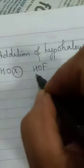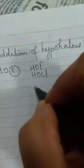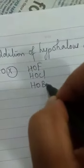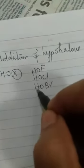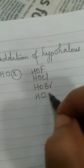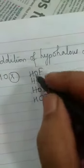You can have different types. You can have HOF, HOCL, HOBR. It should be more correctly OH and F, OH and CL, OH and BR, OH and I and OH and AT. We all don't consider that.